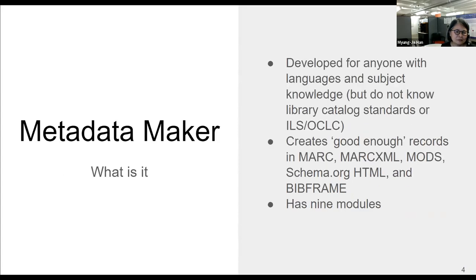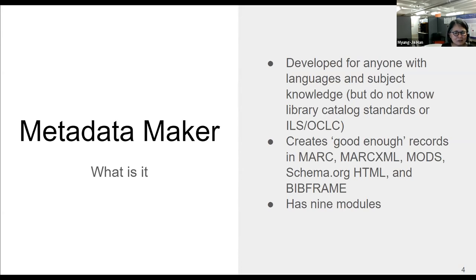Developed in 2015, the Metadata Maker is an open source tool that supports anyone who does not know library cataloging standards, integrated library systems, or OCLC to create good enough catalog records in various formats, including MARC, from nine different modules or templates. We decided to revamp the Metadata Maker so it can find, identify, and add a name authoritative URI as a value to the name elements as well as to the output metadata format, including BIBFRAME. Now Greta will talk about how and what we added the linked data functions into the Metadata Maker.